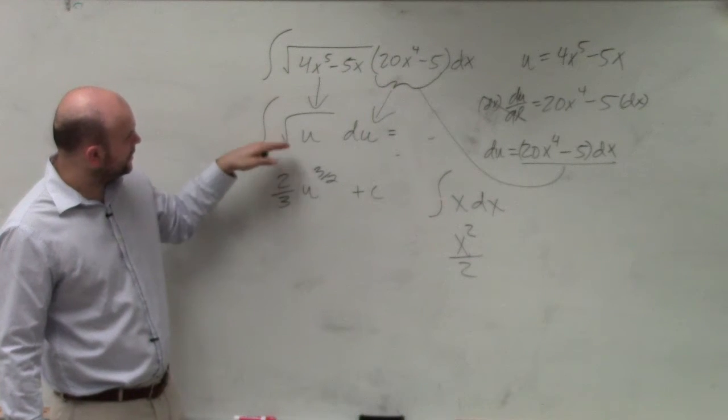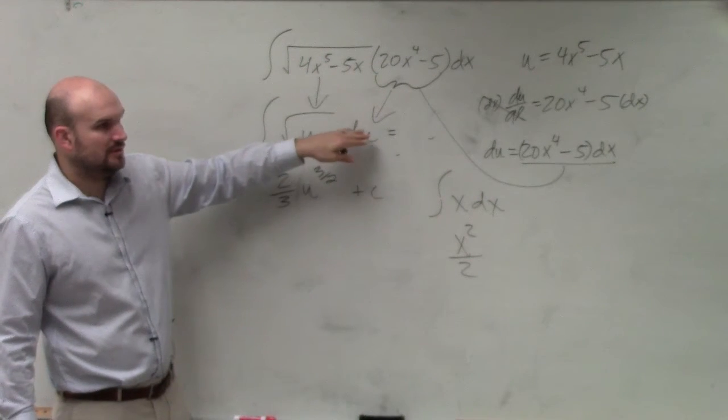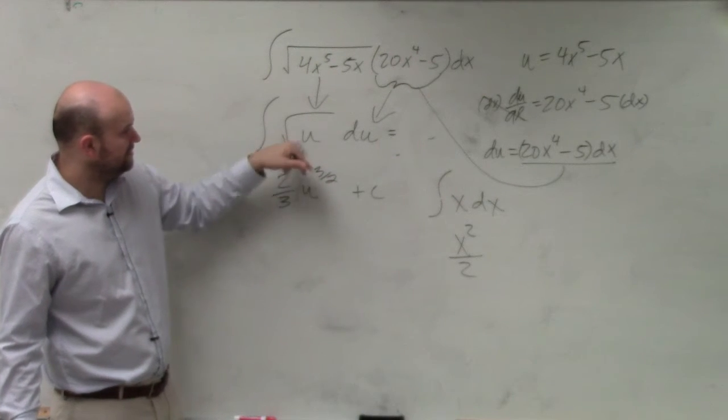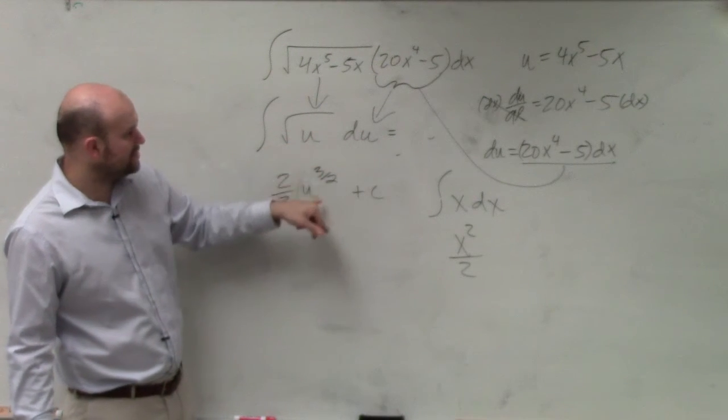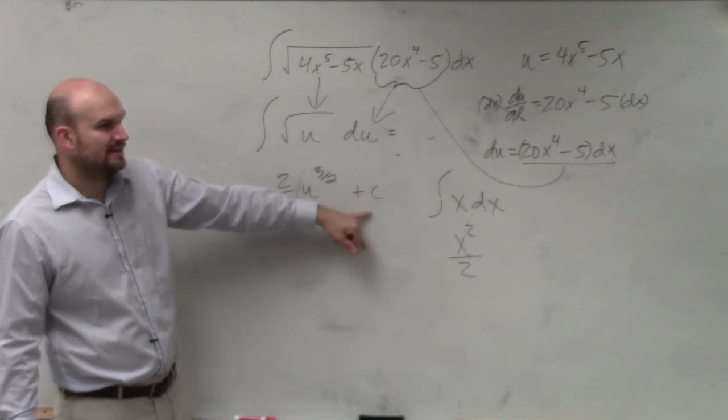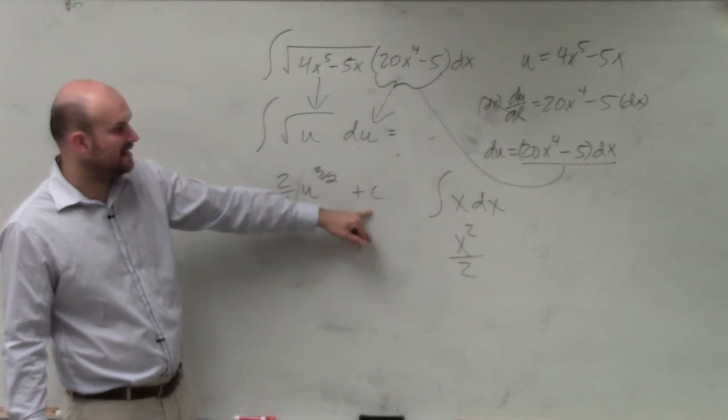Because now, if I'm just taking the integral of the square root of u du, then I can just use normal integration techniques, which would be rewriting that as a fraction, which I showed you, to the 1 half, and then adding 1, dividing by its reciprocal, and then going with my plus c, with my constant.